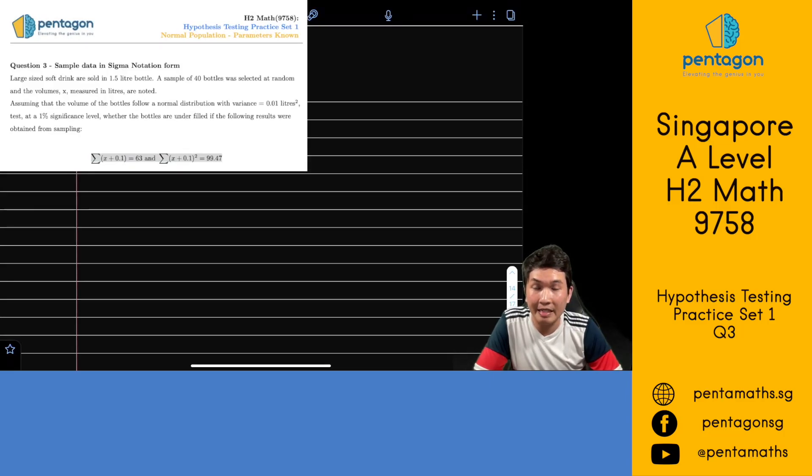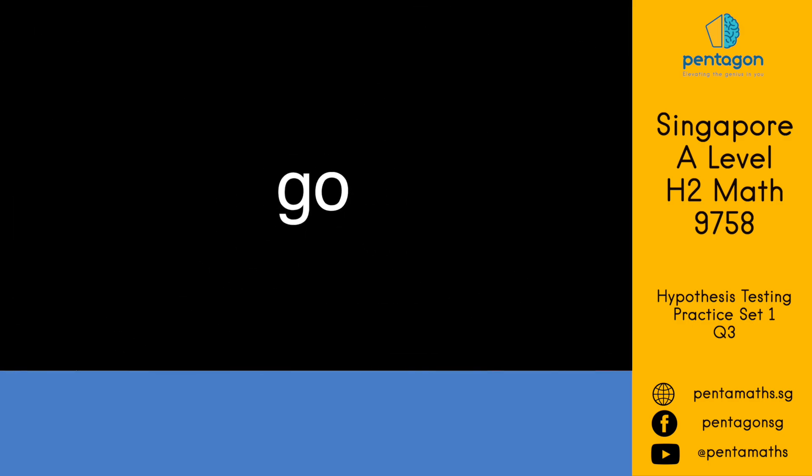Hello and welcome to question 3. In this question, our sample data is summarized in sigma notation form. This is something that appears in exam questions very often. We'll look at how to deal with this. More importantly, what does it actually mean? Because understanding what it means would result in higher knowledge retention. As usual, let's start with step 0.